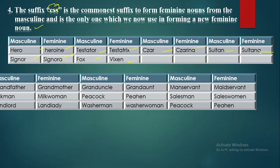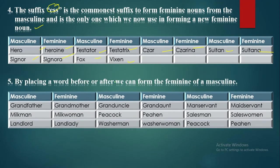The fifth way is by placing a word before or after to form the feminine of a masculine noun. Examples: grandfather/grandmother, milkman/milkwoman, landlord/landlady, granduncle/grandaunt, peacock/peahen, washerman/washerwoman, manservant/maidservant, salesman/saleswoman.